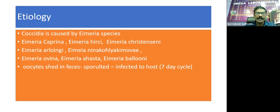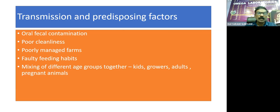Oocysts are shed in feces. They get sporulated and infect the host, and it is a seven-day cycle. Oral-fecal contamination is the biggest source of transmission of coccidia.